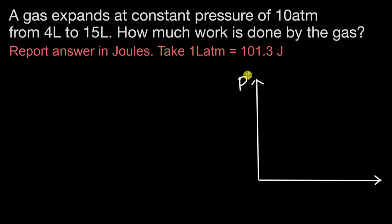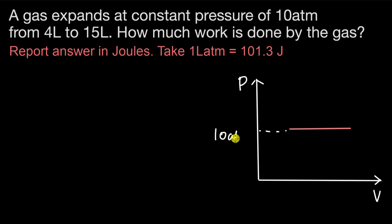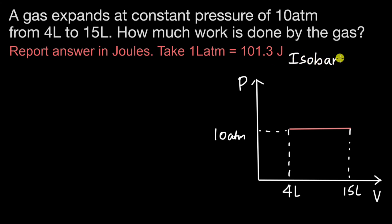The y-axis is the pressure and x-axis is the volume. The gas is expanding at constant pressure of 10 atm from 4 to 15 liters. We can draw it like this — we have a constant pressure of 10 atm and the gas is going from a volume of 4 liters to a volume of 15 liters. When the pressure doesn't change and there is a change in volume, that process is called an isobaric process.